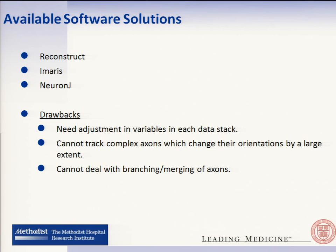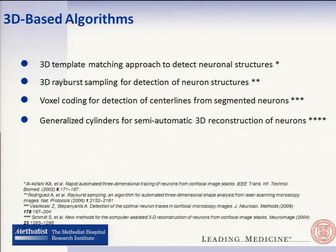There are a few available softwares which could potentially be used to solve this. For example, there's Maris Neuron J, which could be used to trace the center lines of the axons. But the main drawback is that they either operate on the maximum intensity projection image, which is a 2D image, or a sequence of 2D images, so in case of a drastic change in orientation, it is really hard to track them efficiently. There are other algorithms proposed in literature for tracking tubular objects, such as template matching and Aribus sampling. However, the problem in our case is so different from those in the literature that these algorithms cannot be used directly for this application.